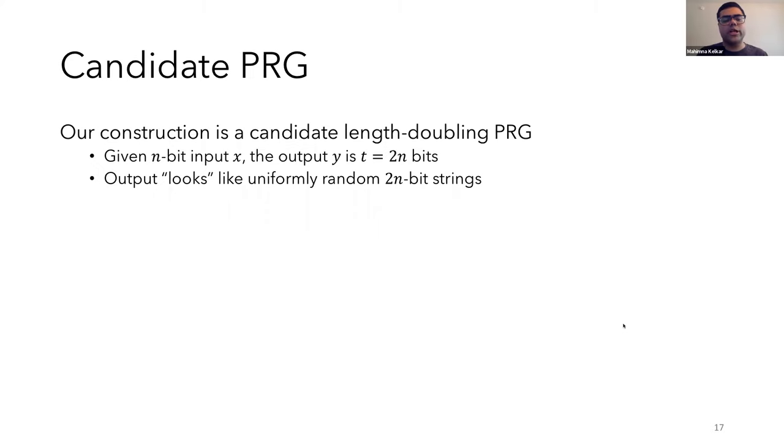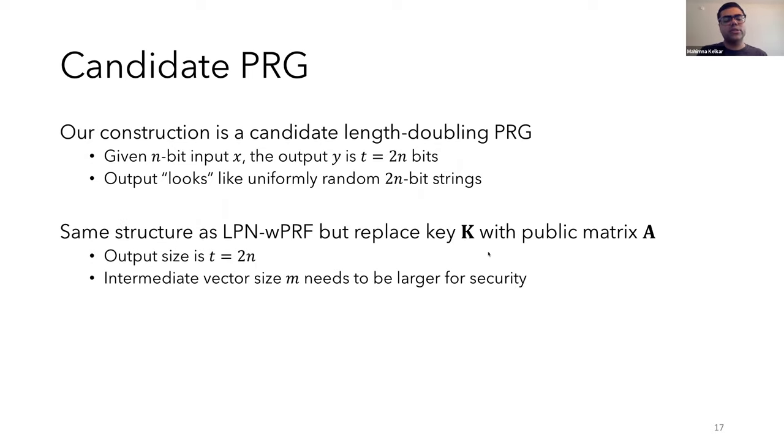And finally, I'll briefly introduce our candidate length doubling PRG, which needs to be able to generate 2n bit strings that look uniformly random. So the PRG has essentially the same structure as the LPN weak PRF. But now instead of using the key k, we have a public matrix A over Z2. And for security, we'll need to make sure that the intermediate vector is slightly longer.